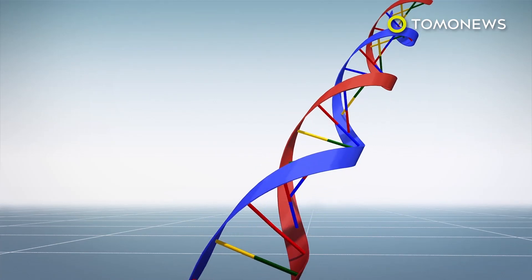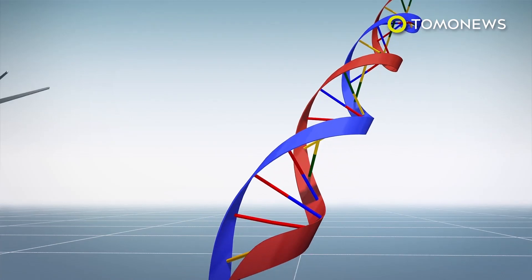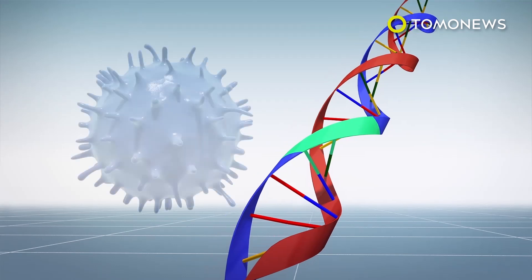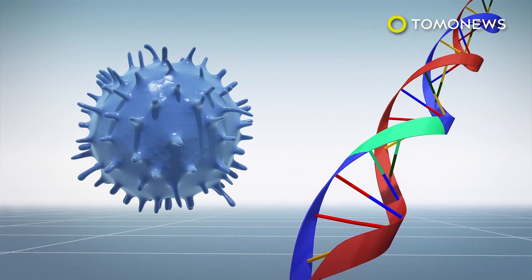Last year, Chinese scientist He Jiankui revealed he had successfully edited the CCR5 gene in the embryos of twin girls using CRISPR-Cas9 technology. By altering this gene, he expected the twins would be protected from contracting HIV. However, new studies show he might have inadvertently shortened their life expectancy as well.